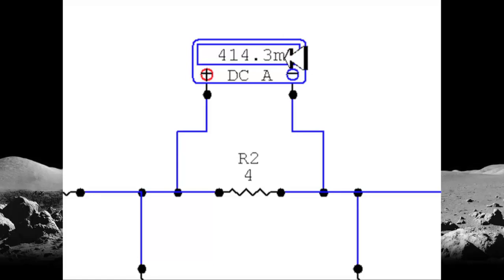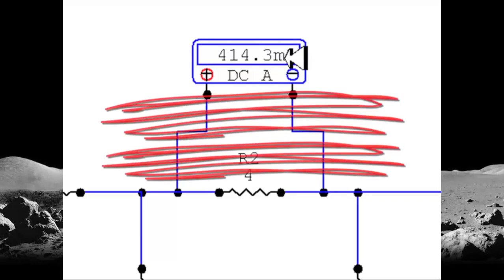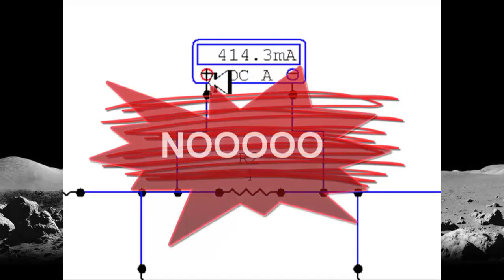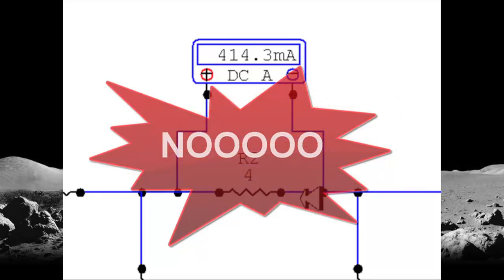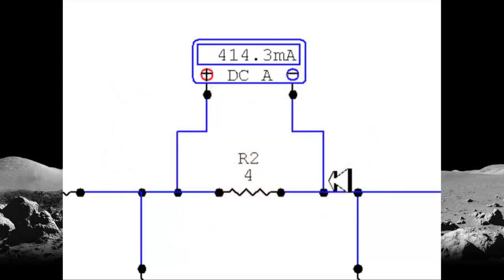So when I run the simulation, now the ammeter says that the current is 400 milliamps instead of the value that I had before, which was the right one. This, I repeat, is a firing offense. You never connect an ammeter in parallel with the branch you're going to be measuring the current in. No, no, no, no. You have to connect the ammeter in series with that branch.